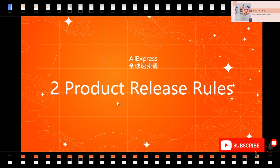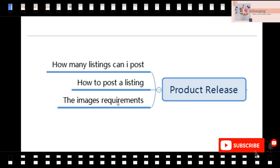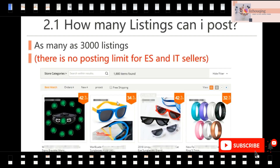After we have a store and our store is opened, we should learn the product release rules — how can we release products onto AliExpress. In this chapter, I will cover three aspects: how many listings can I post, how to post a listing, and the image requirements. Normally in a store, you can post as many as 3,000 listings. However, there is no posting limit for Spanish or Italian sellers, so you can post as many listings as you want.